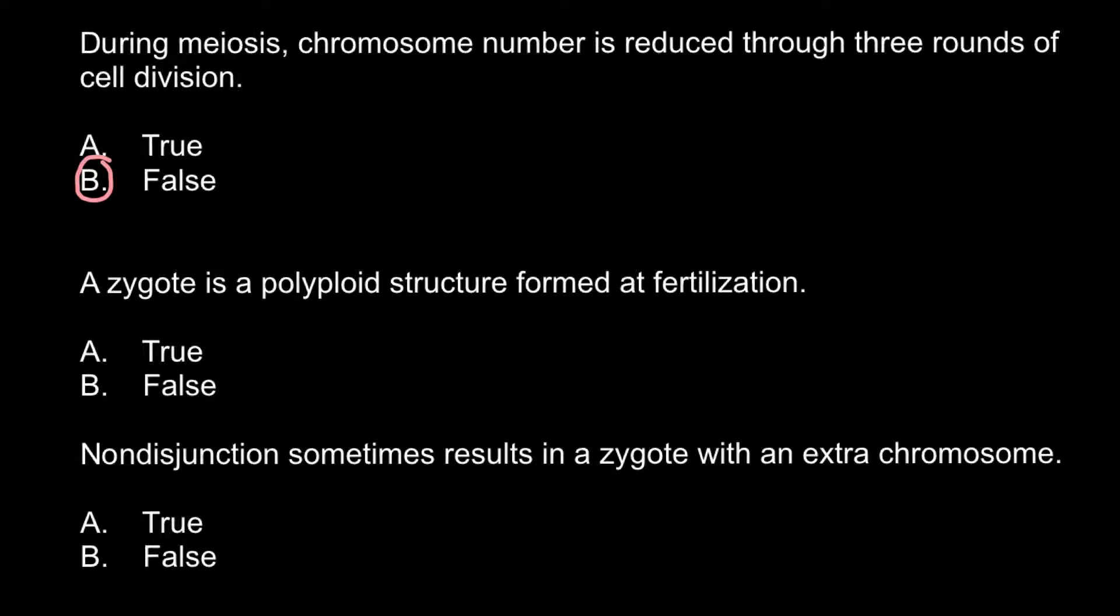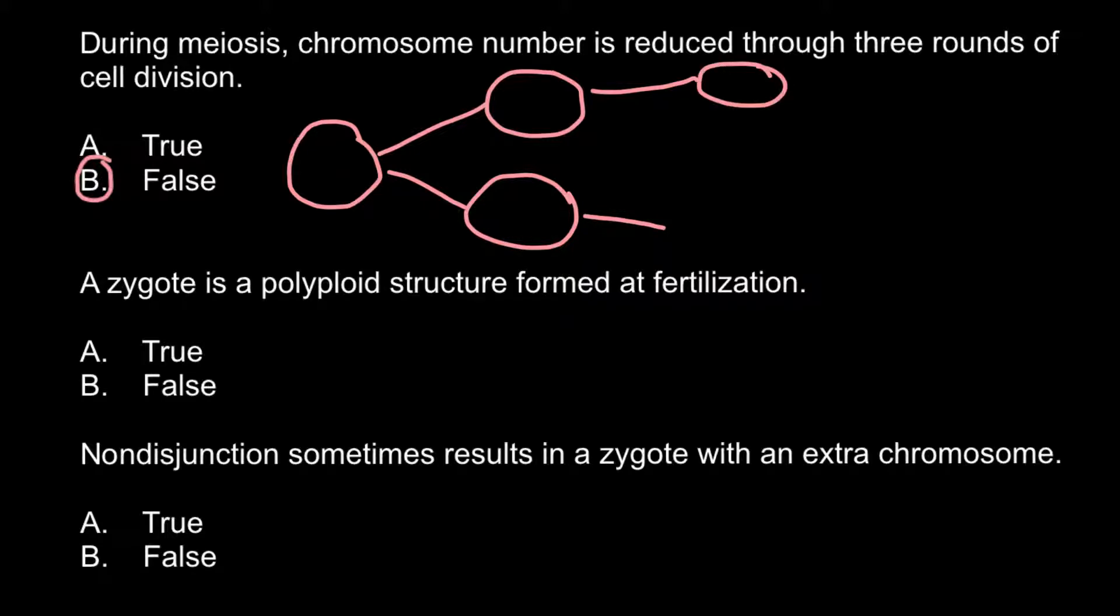This is false, because during meiosis chromosome number is reduced through two rounds of cell division. First we start with a diploid cell that would double the number of its chromosomes and would be tetraploid. This cell would divide and result in two diploid cells. Second round of cell division, we're going to get four haploid cells. So as you see, this is the first round and this is the second round.